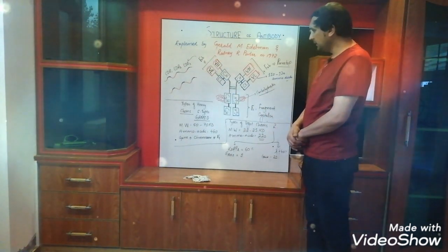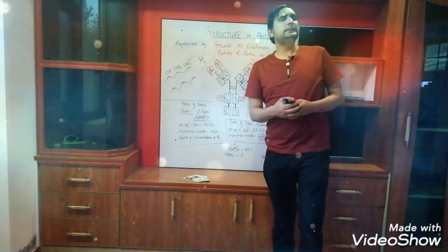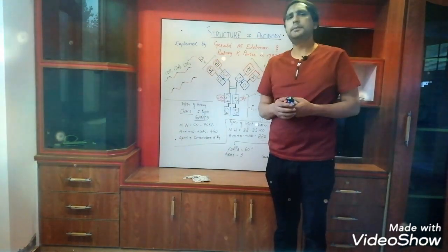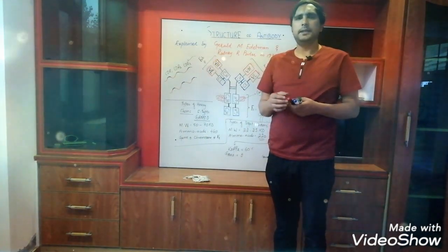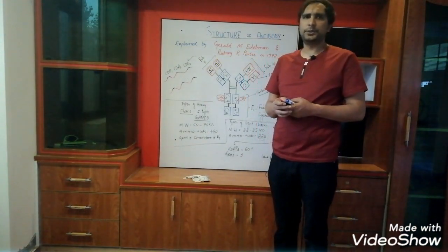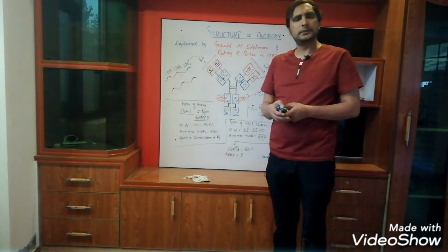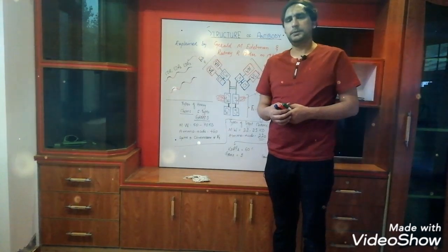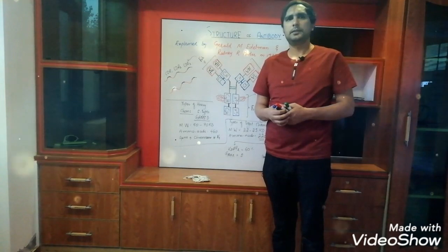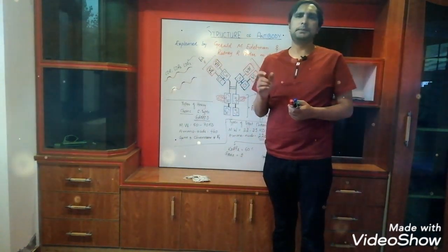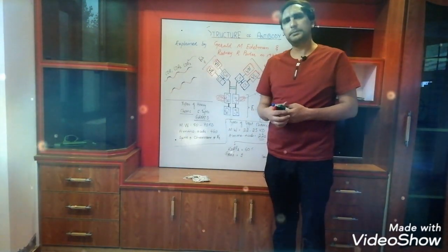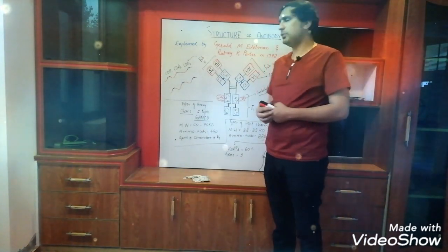Next are the functions of antibodies. Antibodies function either directly or indirectly. Directly, they may cause agglutination, precipitation, or neutralization. Indirectly, antibodies play an important role by activating the complement system. The complement system proteins can be activated by the classical pathway, alternative pathway, or MBL pathway. Antibodies play a vital role in activating components of the complement system through the classical pathway.